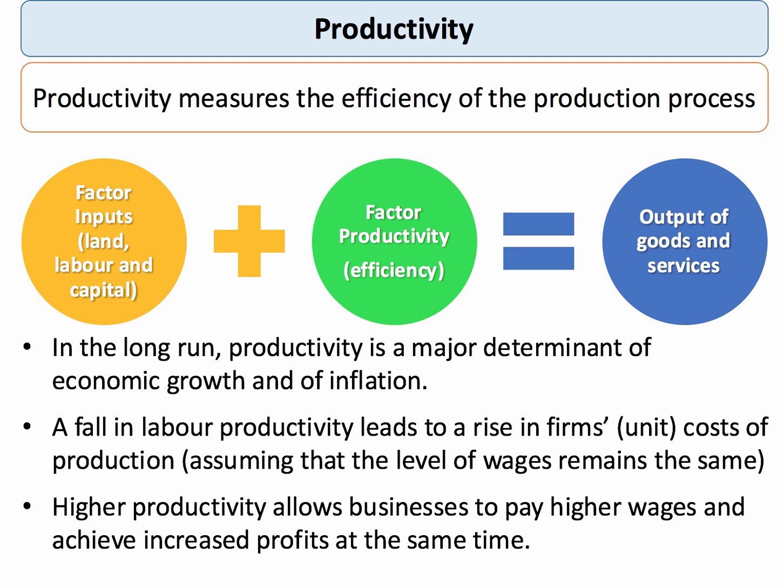If one thinks about it in macroeconomic terms, productivity growth is the major determinant of sustained growth of GDP and also of keeping inflation down. If productivity goes down — for example, if labour productivity takes a bit of a dip — that's going to lead to an increase in businesses' unit costs, assuming workers are being paid the same.